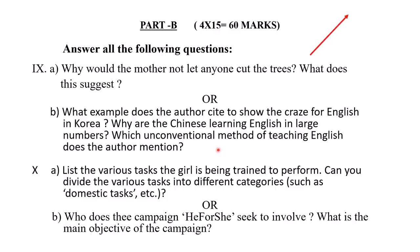He also says that in China a great number of students are learning the language. Li Yang, an entrepreneur, has developed 'Crazy English,' an unorthodox teaching method — this is the unconventional method. His slogan is 'Conquer English to make China strong.' The strong belief is that learning English is the essential skill for surviving in the modern world.